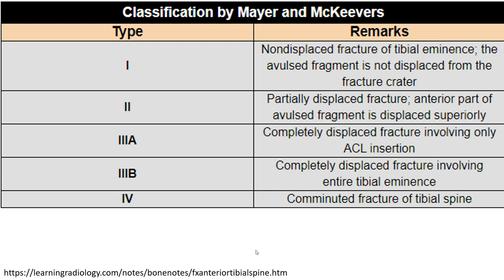In the modified classification: Type 1 is a non-displaced fracture. Type 2 is a partial displaced fracture where the anterior part of the avulsed fragment is displaced superiorly. Type 3A is a complete displaced fracture involving only the axial insertion. Type 3B is a complete displaced fracture involving the entire tibial eminence. Type 4 is a comminuted fracture of the tibial spine.